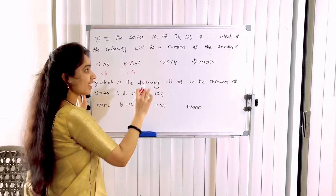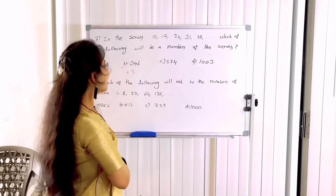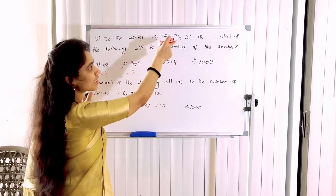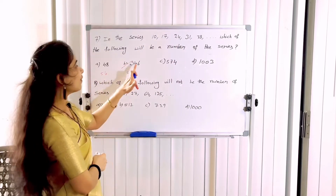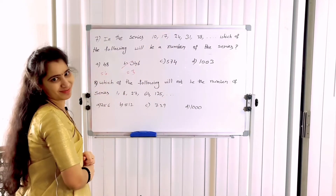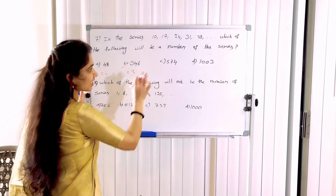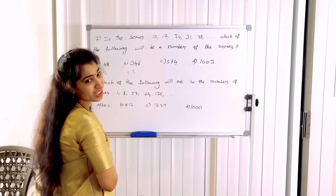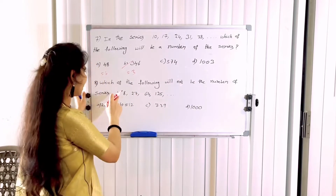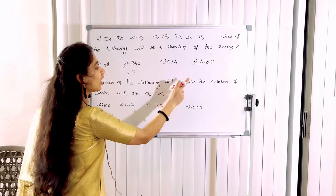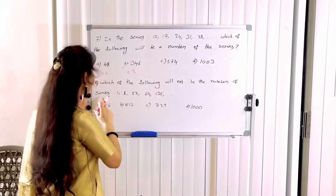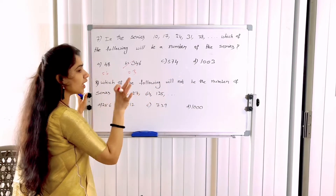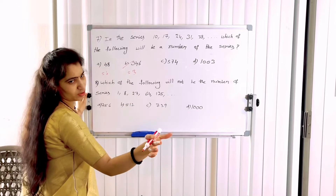The answer is 3. What number of the series is 346? Next: which of the following will NOT be a number of the series?